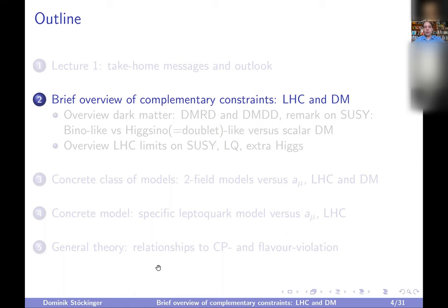The models we discuss today: first, a no-name two-field model which can in principle accommodate g-2, and we will check whether it also explains LHC and dark matter. Second, a leptoquark model, which is genuinely interesting, and we will compare its predictions against g-2 and LHC data. At the end, in the last 15 or 20 minutes, we will discuss general theory relationships between g-2 and other flavor quantities: g-2 of the electron, flavor-violating observables, and CP-violating observables.